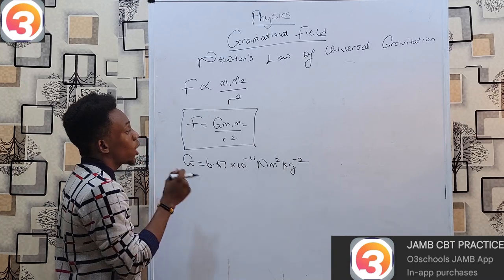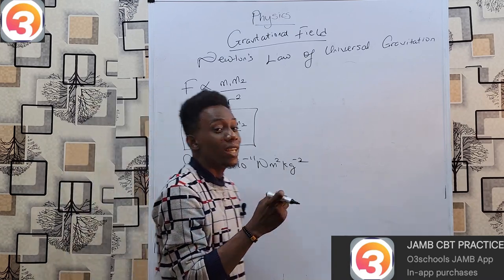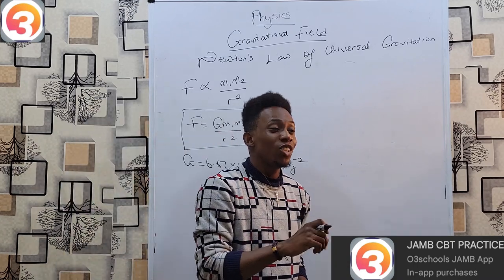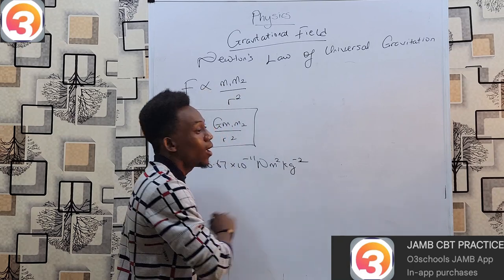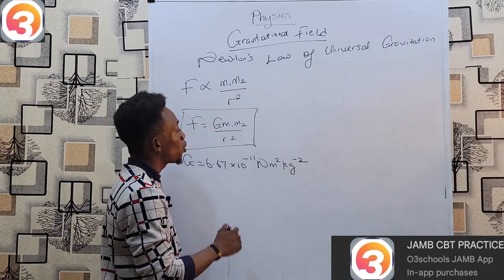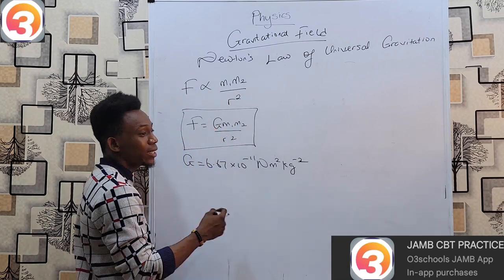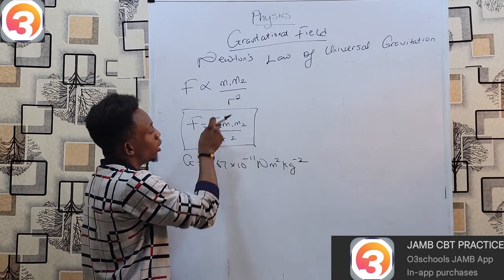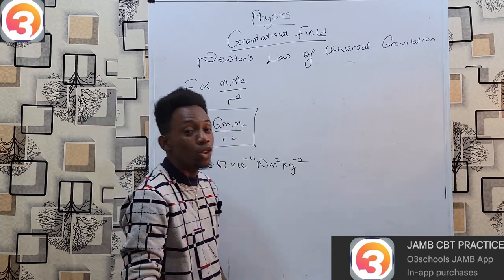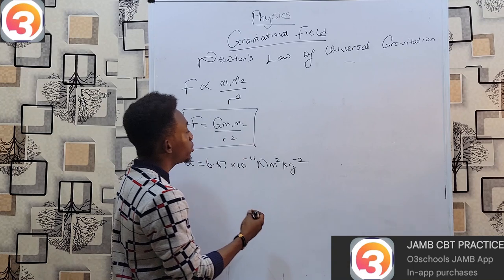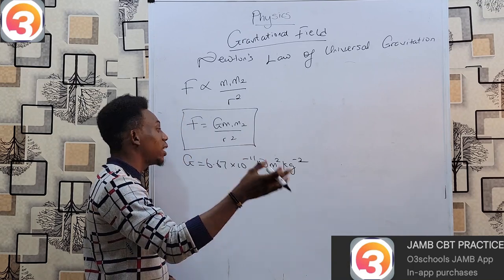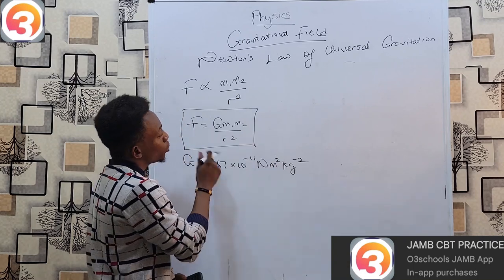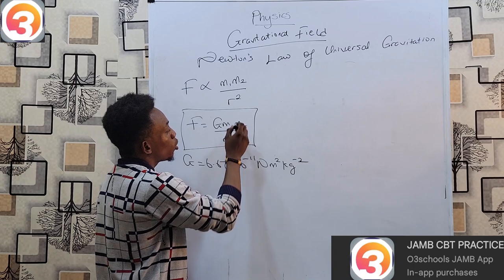This law simply tells us that every single object, everyone not just planets, every object has a gravitational field around them. However, for typical tiny objects their masses are so small that the gravitational field is very negligible. When it comes to heavenly bodies which are massive like the earth and the moon, gravitational field is much more noticeable because of the mass.